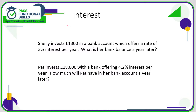Let's take a look at interest. Interest is something that banks offer you to reward you for investing your money with them. In the first example, we can see that Shelley is being offered 3% interest per year. She gets an extra 3% of £1,300 every year to thank her for investing her money with this bank. So at the end of the year, all we need to do is work out 3% of £1,300 and add it on.